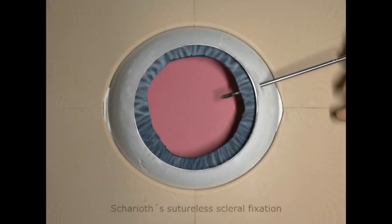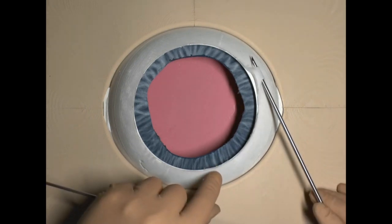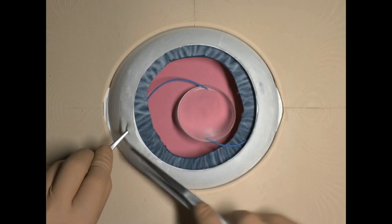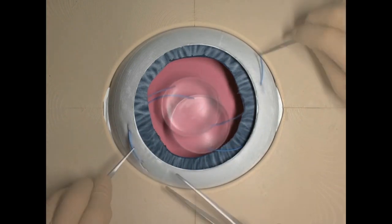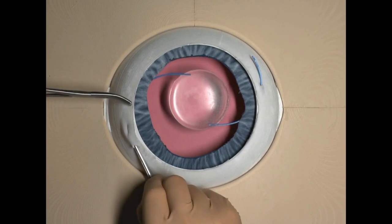Shariat begins his suture's fixation by a straight sclerotomy using 24-gauge needle. From the external part is created a limbus parallel tunnel 2-3 mm long. The haptic of 3-piece lens is externalized using 25-gauge forceps and pulled through the tunnel.